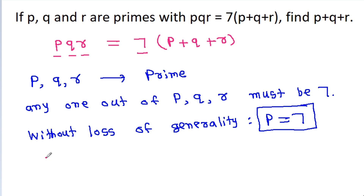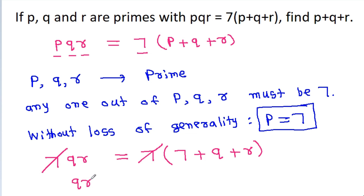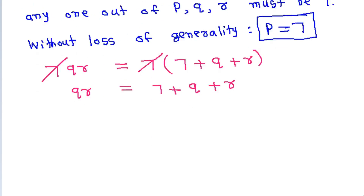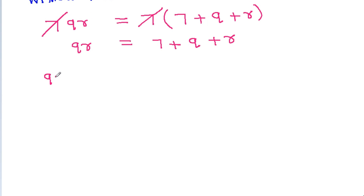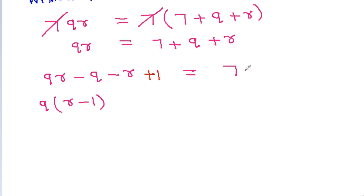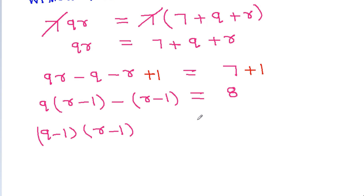The equation will become 7 times qr is equal to 7 times 7 plus q plus r. The 7 will get cancelled, so qr equals 7 plus q plus r. Rearranging, qr minus q minus r equals 7. Taking q common gives q times r minus 1, and adding 1 to both sides, we get q minus 1 times r minus 1 equals 8.